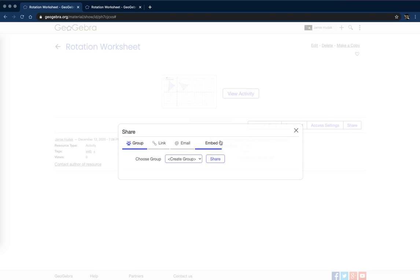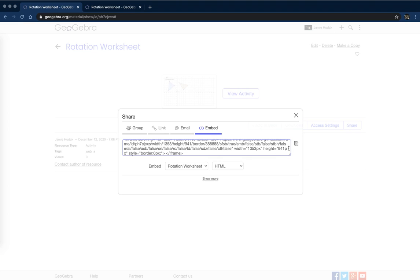And then here's your embed code, and this little button lets you copy it. And now you can paste the embed code into your learning management system, and the GeoGebra worksheet will show up in there however you last saved it.